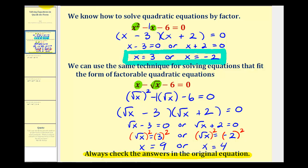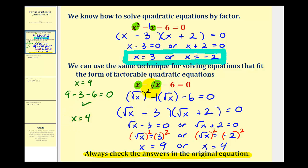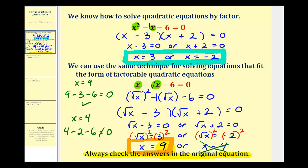Let's check these solutions. If x equals nine, we have nine minus the square root of nine, which is three, minus six equals zero — that checks. Now checking x equals four: four minus the square root of four, which is two, minus six equals zero — that's not true. So x equals four is an extraneous solution. We only have one solution, which is x equals nine. It's important that we always check our solutions when using this technique.